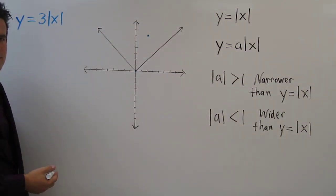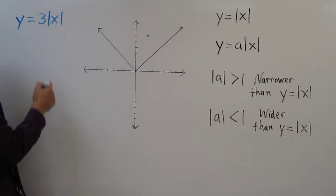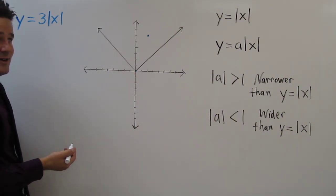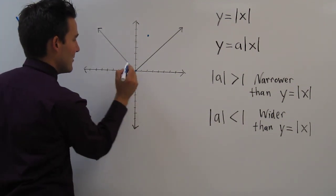How about when x equals negative 1? When x equals negative 1, the absolute value of negative 1 is 1. 1 times 3 is 3, so we have the point (-1, 3).